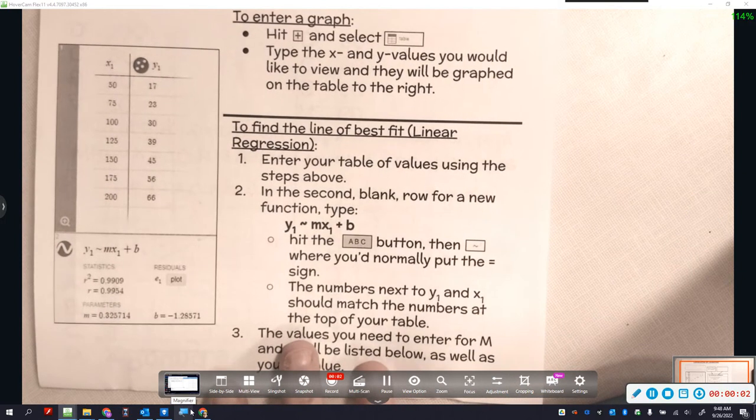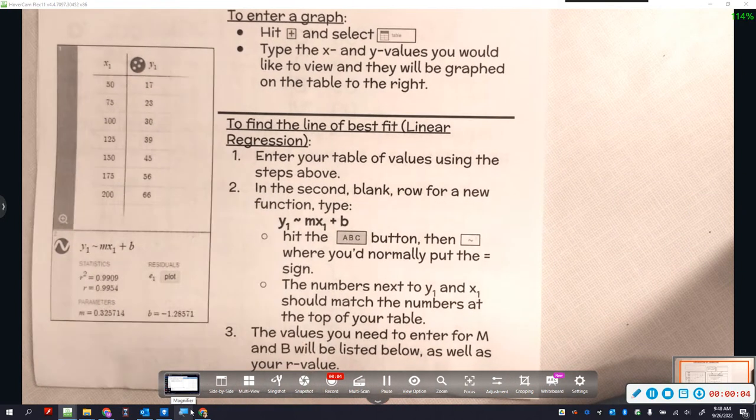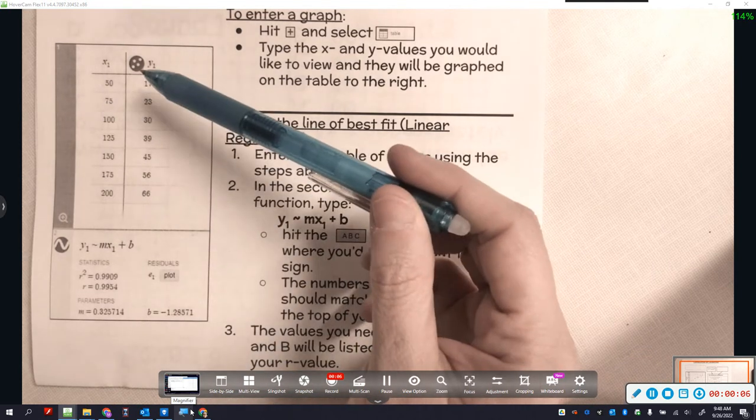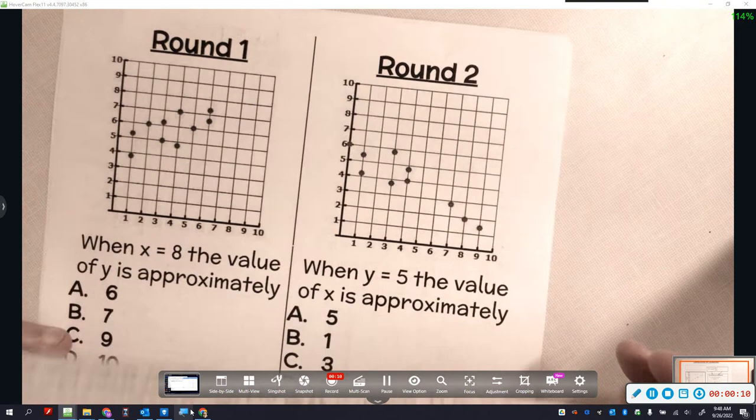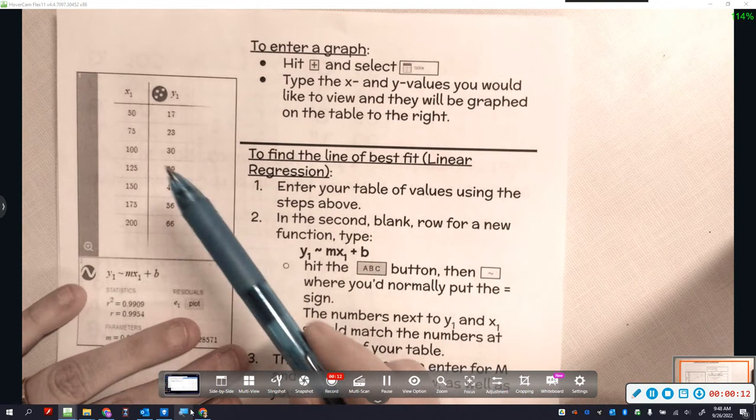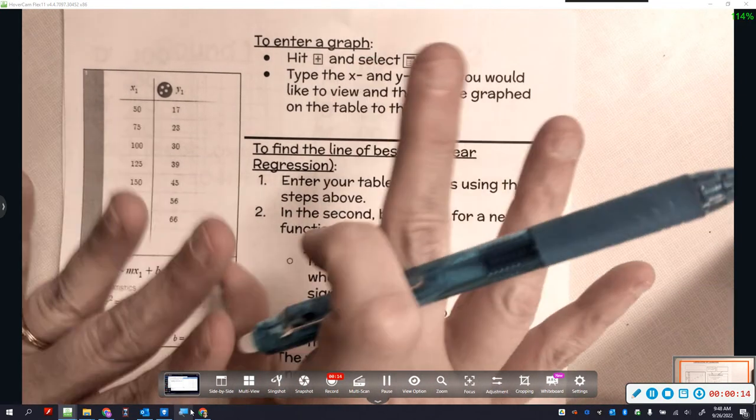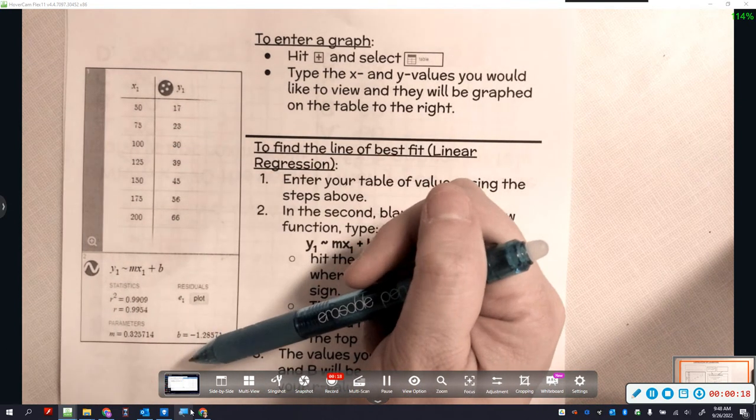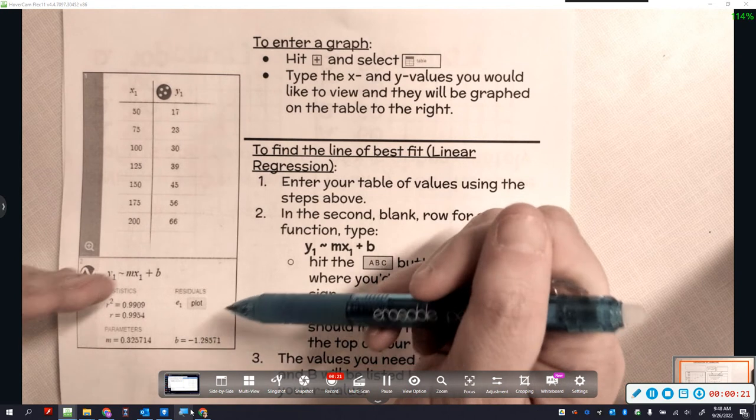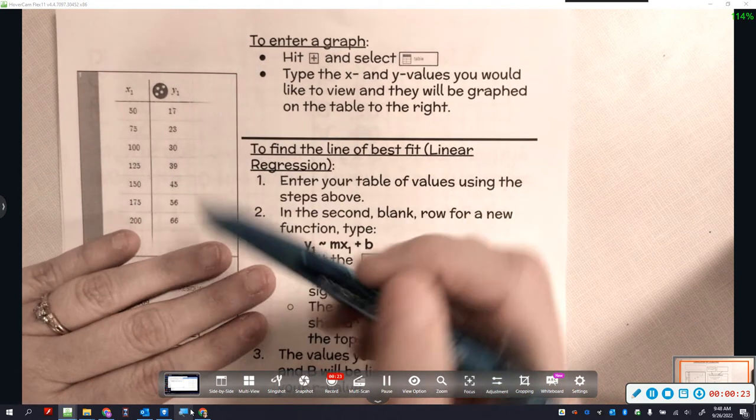Okay, so the final thing we're going to learn for this unit is how to use our calculator to give us the best equation. Remember, we've been playing around in class with finding the best equation, adjusting the slope and y-intercept. This will help us figure out how to have the calculator tell us the best equation.